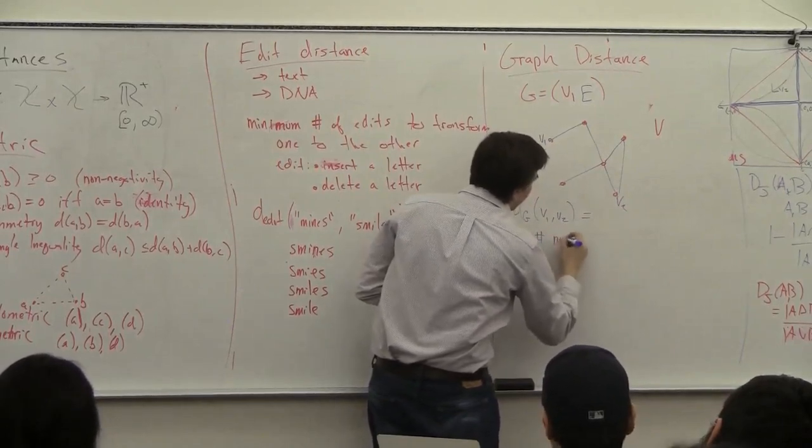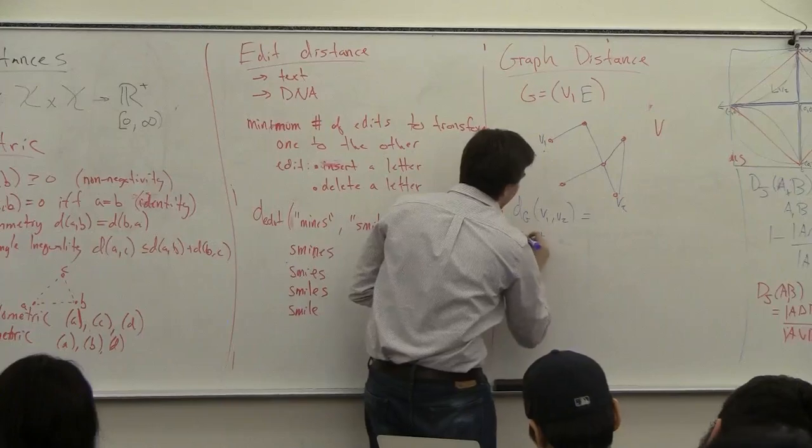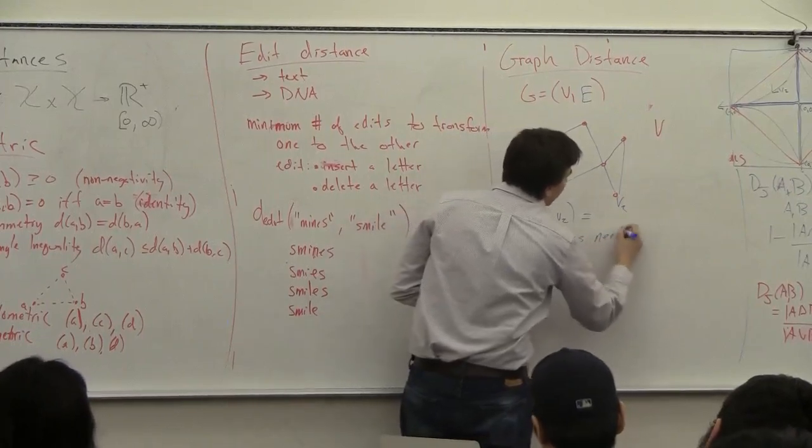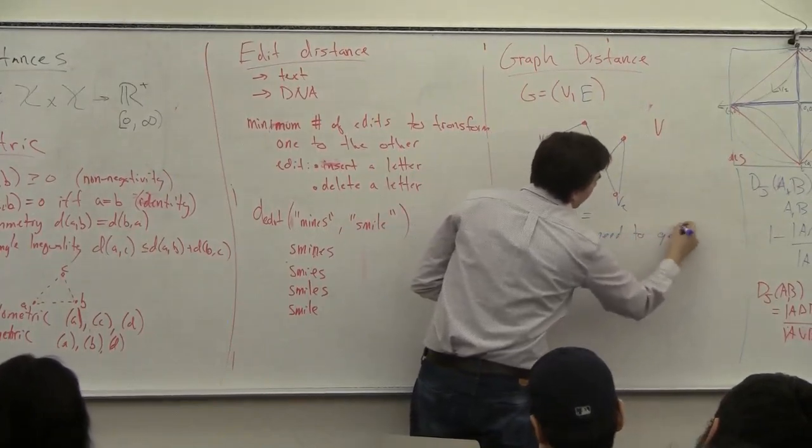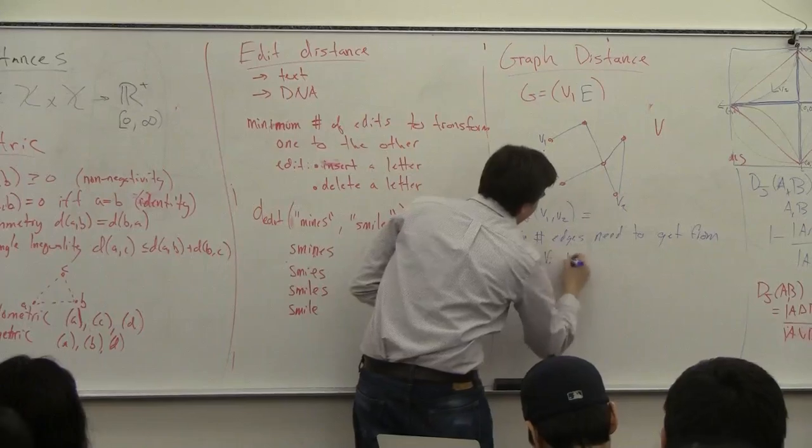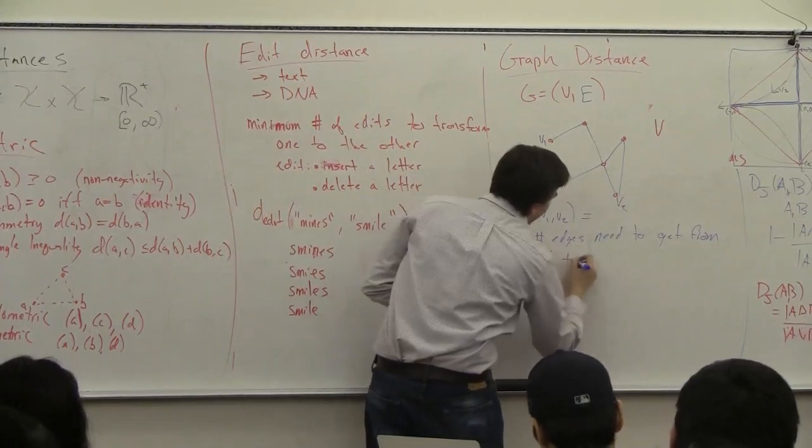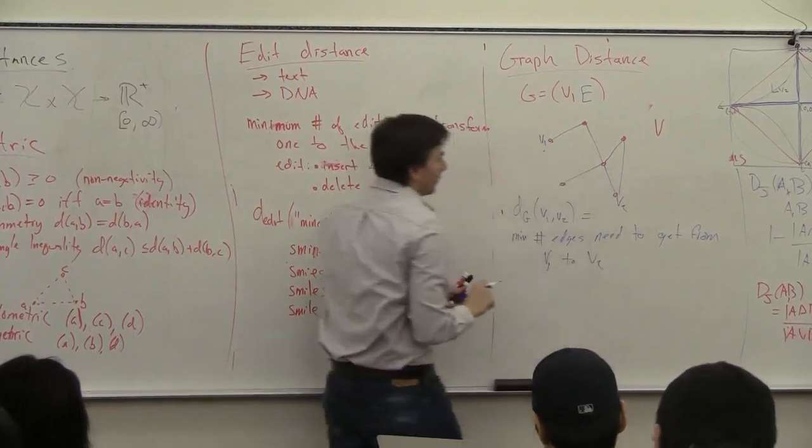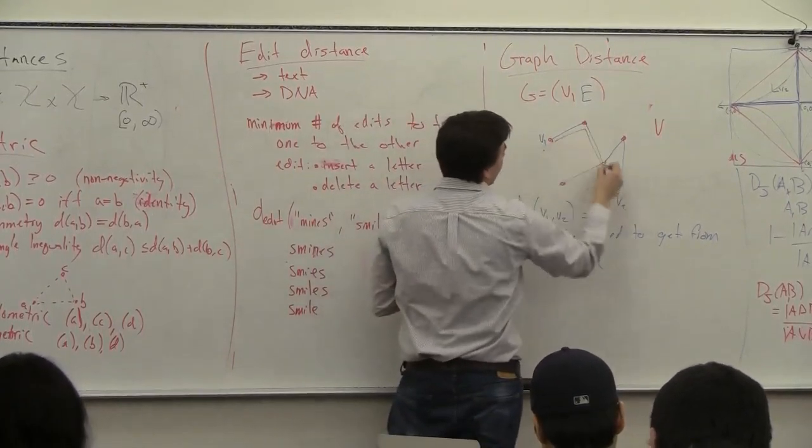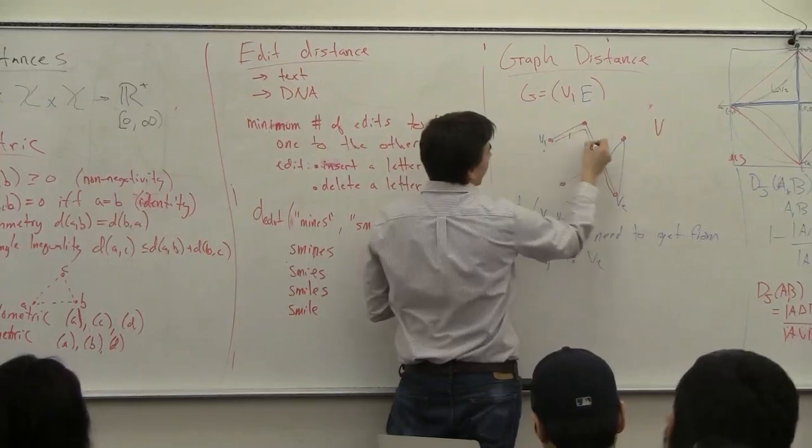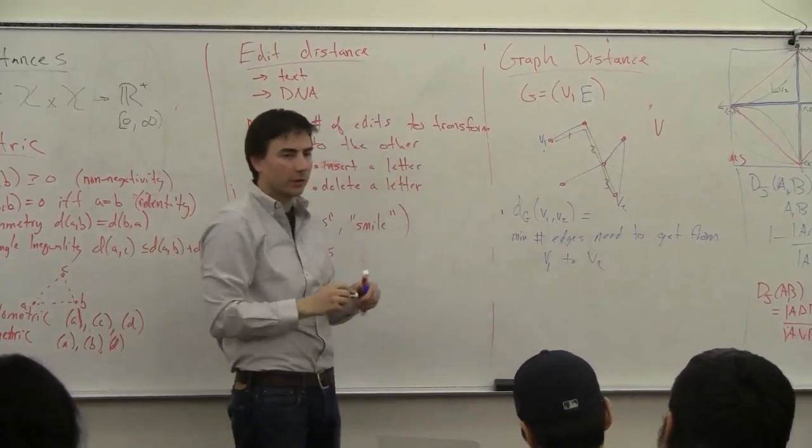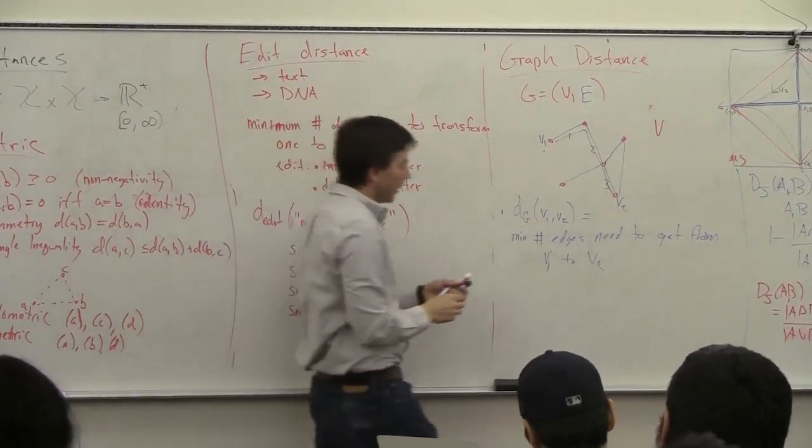In this case, you can do it in three edges here, so one, two, three. This is also a metric. There's a version of a graph which has edges which are directed, so you can only go in the direction of the arrow.